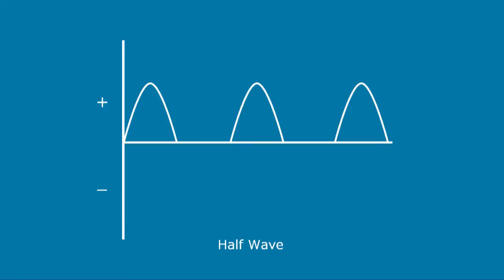A half wave rectification takes one half of the sine wave and blocks off the other half. By only allowing one half of the sine wave, the polarity is no longer alternating and becomes linear as in DC power.